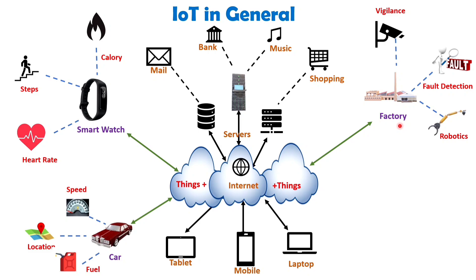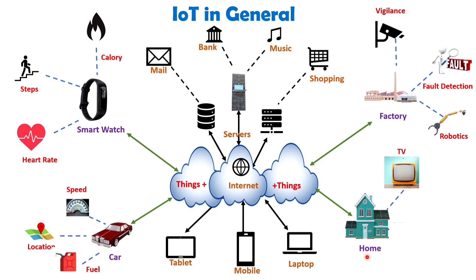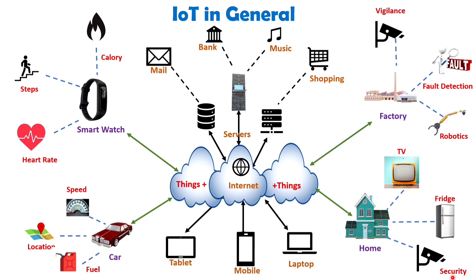Finally, let's consider IoT implementation in a home setting. Imagine having various devices such as a smart TV for watching online videos, a smart fridge that monitors and controls temperature, and security cameras that alert you to any intrusions by recording suspicious activities. In conclusion, IoT refers to ordinary objects enabled with Internet capabilities, allowing them to sense, manipulate, and control data while taking necessary actions based on predefined parameters.